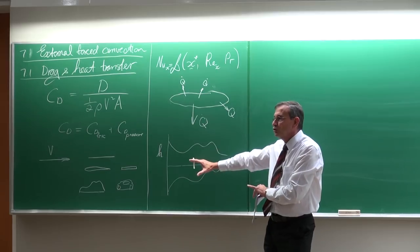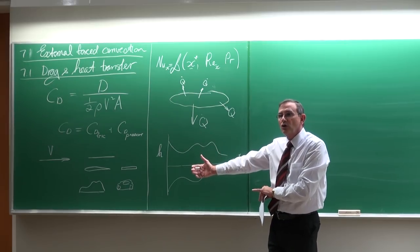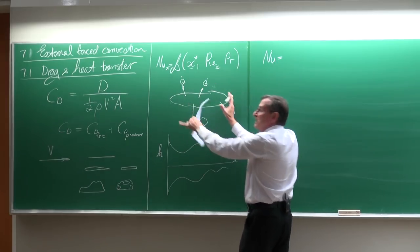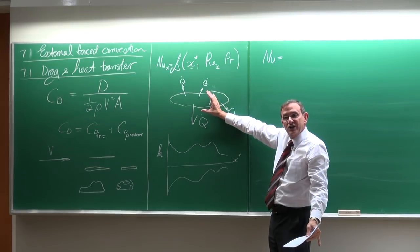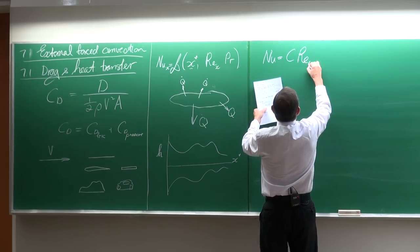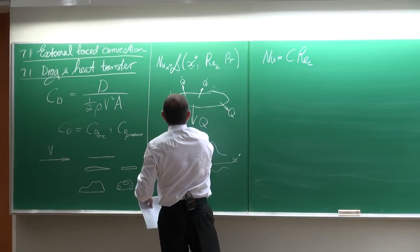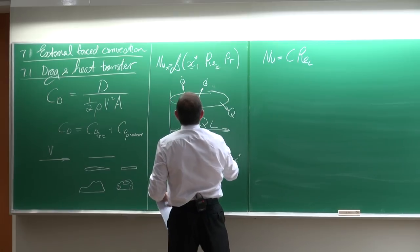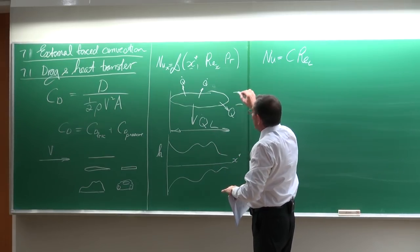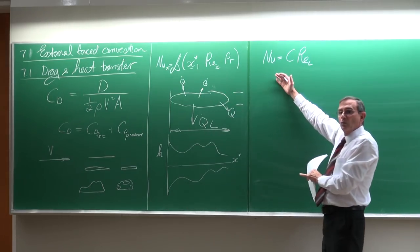In many cases, the local Nusselt number is not a good engineering solution. As engineers, we prefer to use the average Nusselt number for the whole body, not at a local specific point. We write it as a function of the Reynolds number based on a characteristic length, which can be the actual length, a projected length, the width, or even the height, depending on how it was prepared and presented.